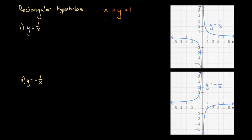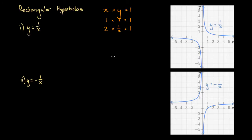Well, you might say we could have x equals one and y equals one — then we get one times one equals one. Then I'd ask you to give me different values. You could give x the value of two, and then in order to have a product of one, we'd have to give y the value of half, because two times half equals one. Then you'd say we could have three times a third — that also equals one.